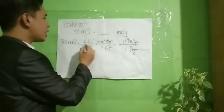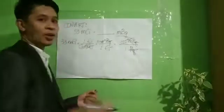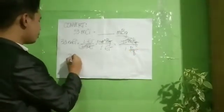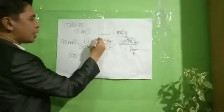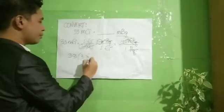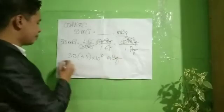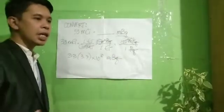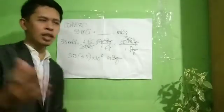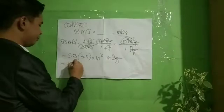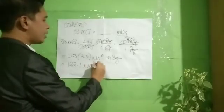We have 1,000 as denominator and 1,000 as numerator, so cancel. Combine all the whole numbers and combine all the exponents. That will become 33 times 3.7 times 10 raised to 10 millibecquerel. 33 times 3.7, that is calculator. So we have 122.1 times 10 raised to 10 millibecquerel.